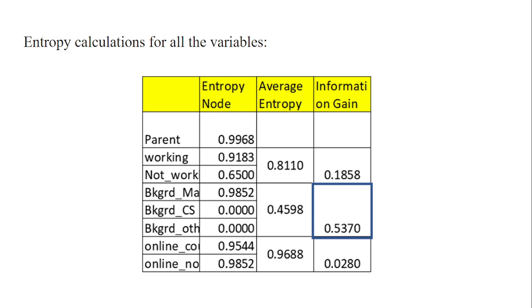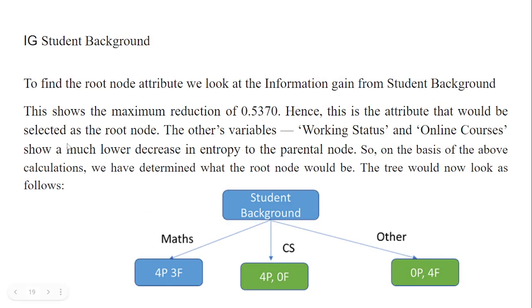We decided that student background is more important and should be split first. The student background is divided into mathematics, computer science, and others. With mathematics background, there are 7 students: 4 pass and 3 fail. In computer science background, there are 4 students: all 4 pass and 0 fail — this is pure. In others background, 0 pass and 4 fail — also pure. Mathematics has entropy greater than zero, so information gain will be more there.